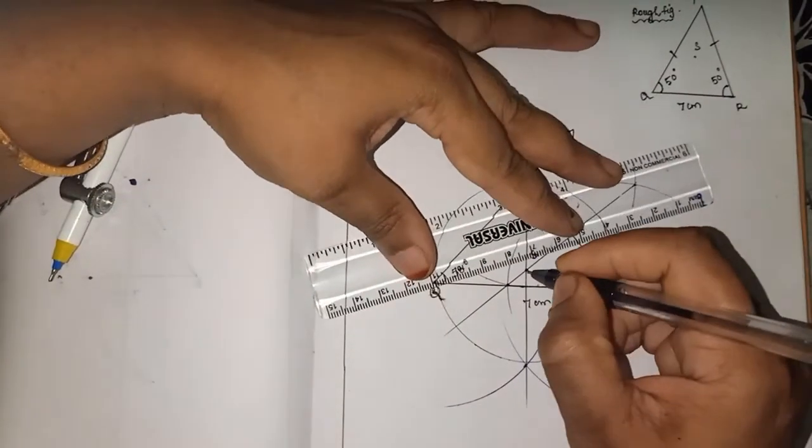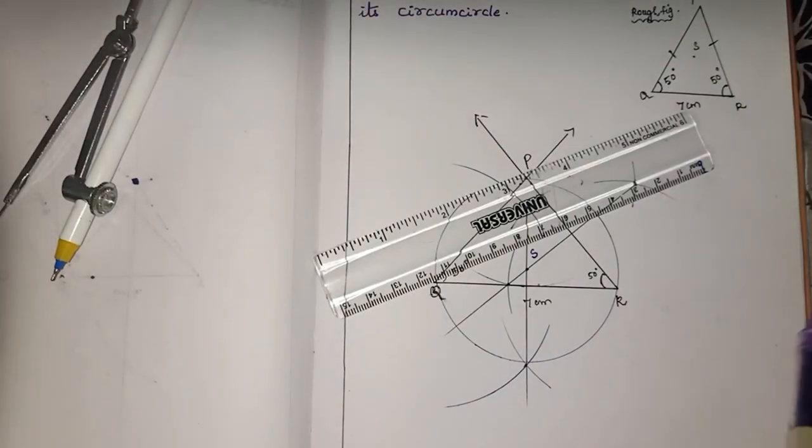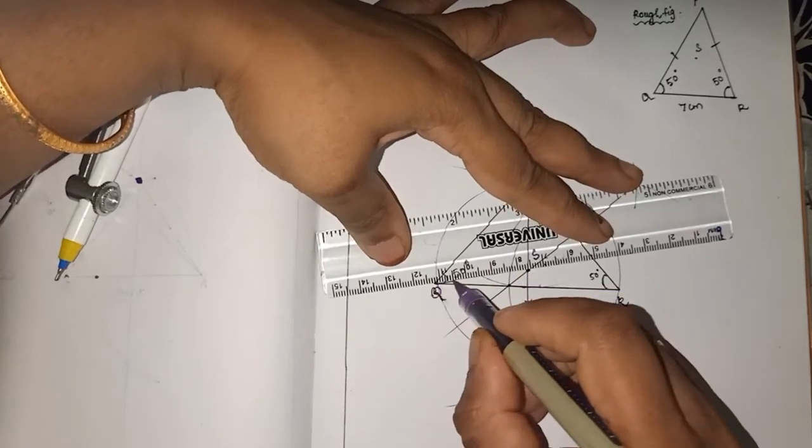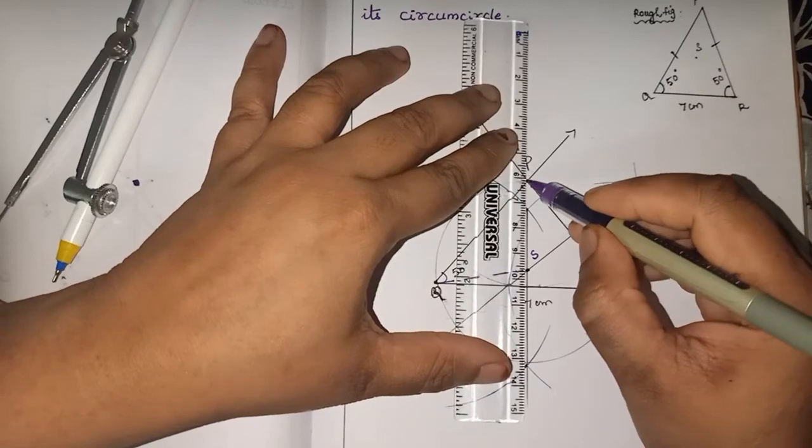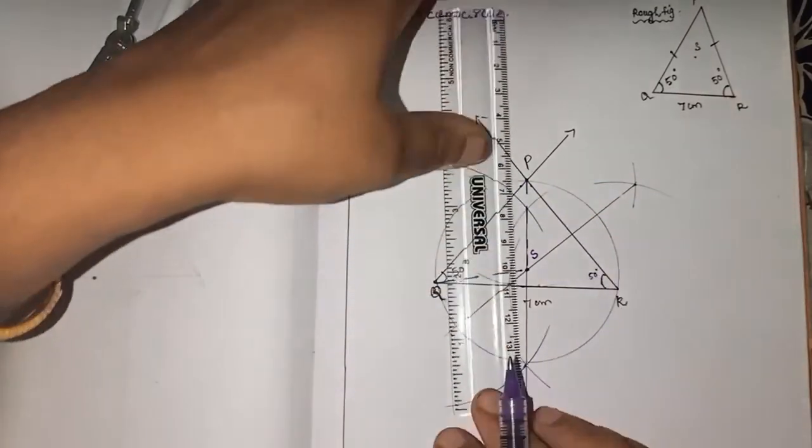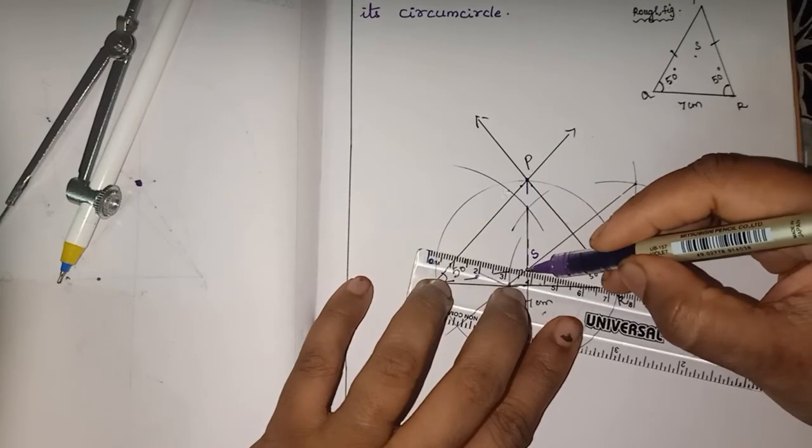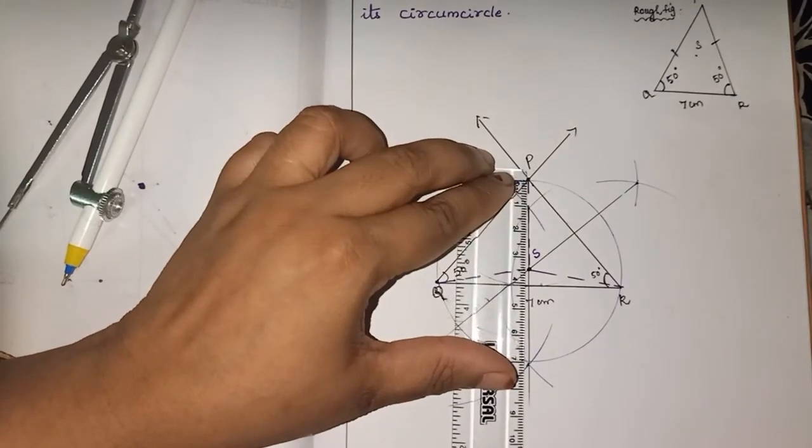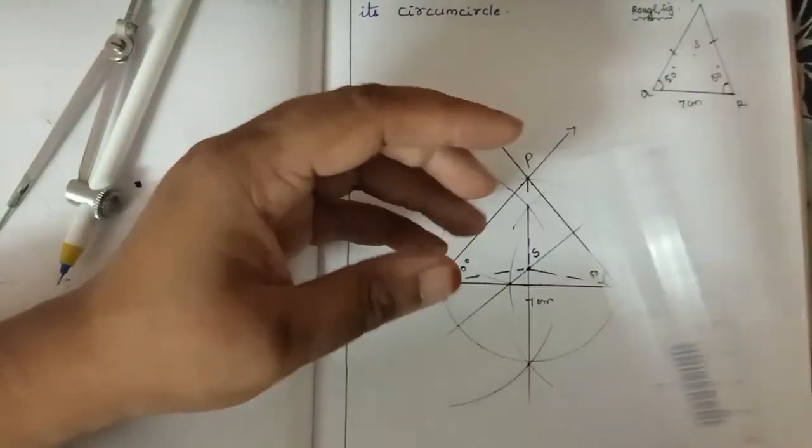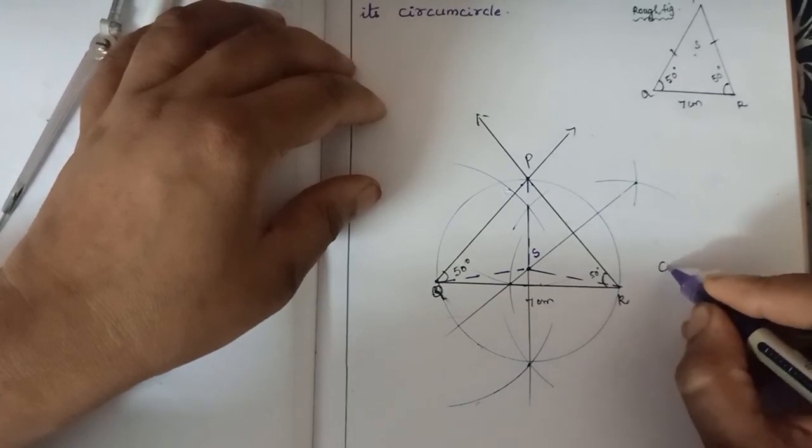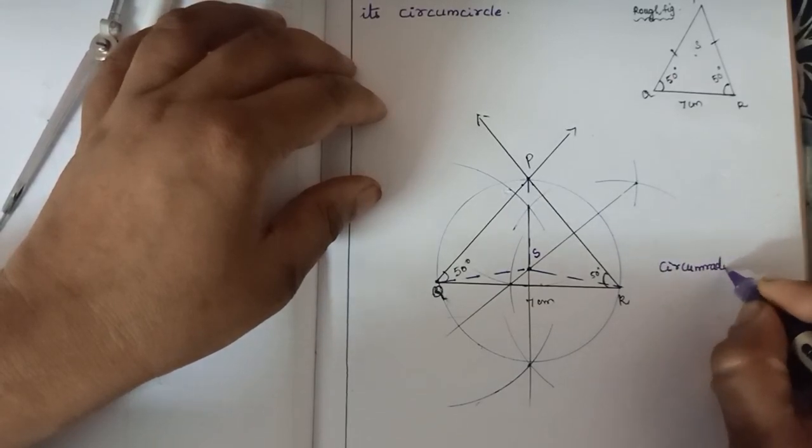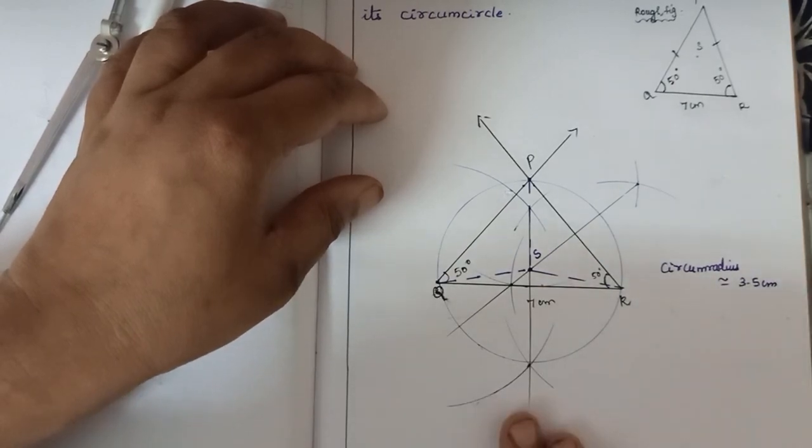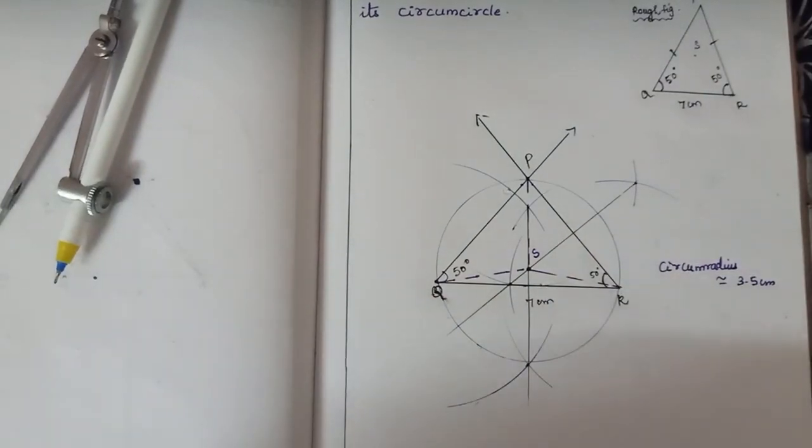So now we measure radius. Measure radius. SQ is the radius. We will dotted line SQ. Next, SP is one of the radius. Next, SR is one of the radius. So circum radius measure, you can check it 3.5. Therefore circum radius will be approximately equal to 3.5 cm. Construction is ready. Like and watch my channel, subscribe my channel. Thank you students.